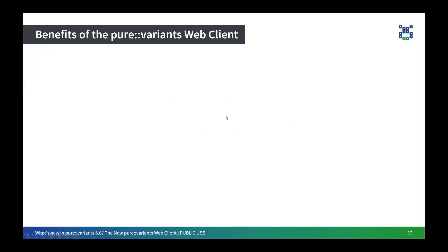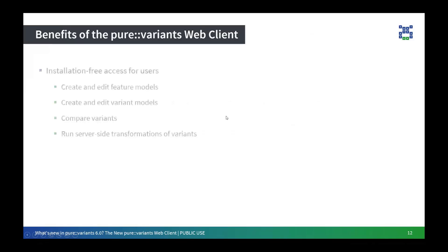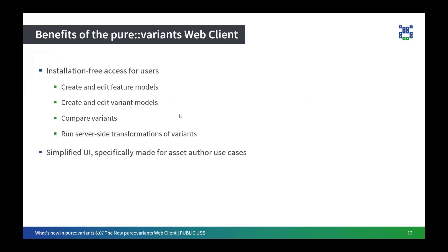Now I would like to sum up the benefits of using the pure:variants web client. First, we offer installation-free access to all users, meaning users can create and edit feature models and variant models, compare different variant models, and perform transformations to get the variant-specific asset — all without having to install anything on the client side. Second, we now have a simplified user interface, which is especially helpful for users who are not using the tool on an everyday basis — the interface is intuitive in nature. Third, we have seamless integration with third-party web-based engineering tools, allowing you to use the same browser for both the third-party web-based engineering tool and the web client.